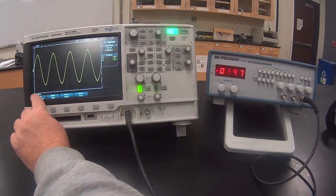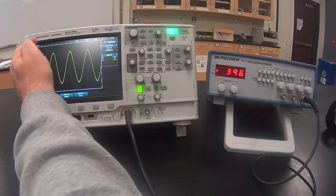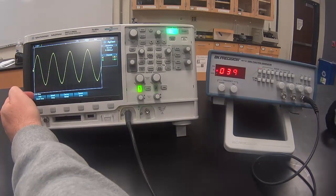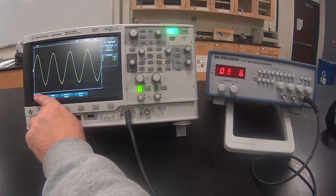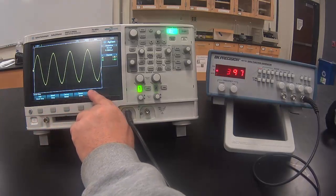Basically the oscilloscope creates a graph of the signal where the vertical axis is the voltage and the horizontal axis is the time.